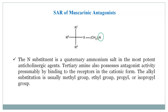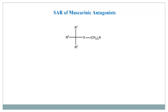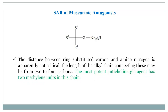The N substituent is a quaternary ammonium salt in the most potent anticholinergic agents, but tertiary amines also possess antagonistic activity by binding to the receptor in the cationic form. Alkyl substitution is usually methyl, ethyl, propyl, or isopropyl. The distance between the ring-substituted carbon and amine nitrogen is not critical, but the chain length may be 2 to 4 carbons, with 2 methylene units (CH2-CH2) yielding the most potent anticholinergic agents.